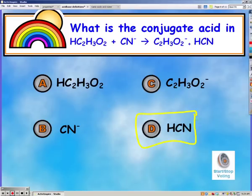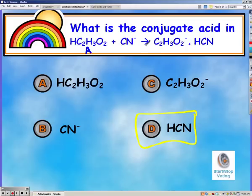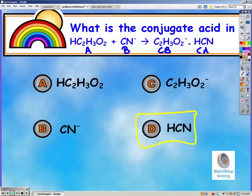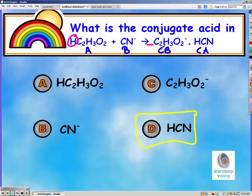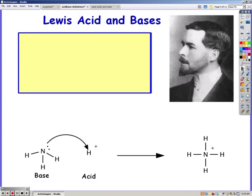You should have gotten that CN- is the conjugate base, and HCN is the conjugate acid. When looking at a pair, the one with more hydrogens is always the acid of the pair. So out of acetic acid and acetate, acetic acid is the acid; and out of cyanide and HCN, HCN is the acid.